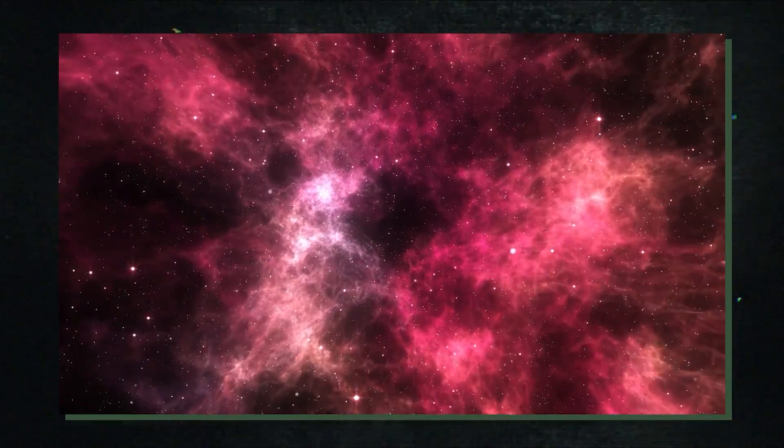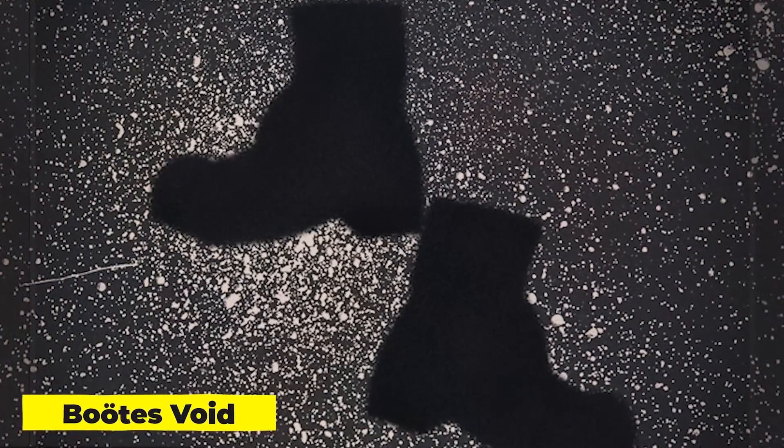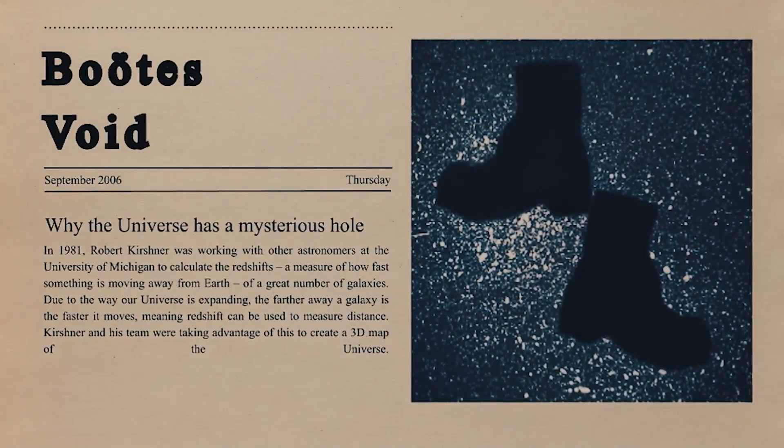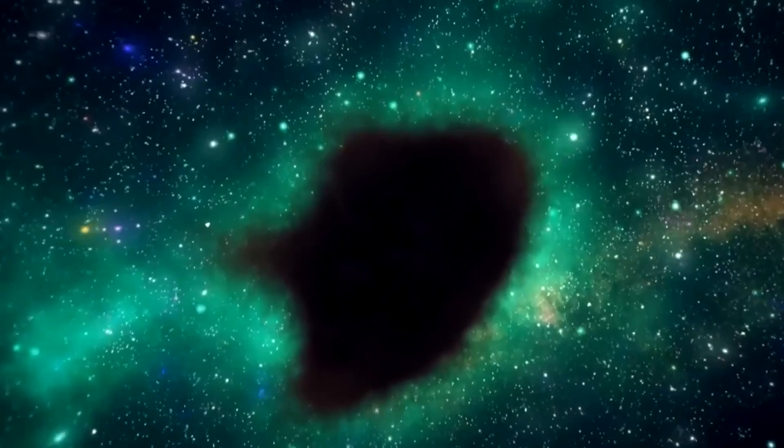But through time it grew to be known as the Boötes Void. The Boötes Void is a rough sphere with a diameter of around 330 million light-years that you won't see if you stare at Boötes, the Big Dipper's neighboring ploughman constellation. It's a ghost town in the galaxy.